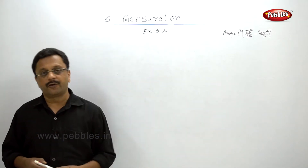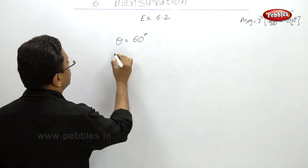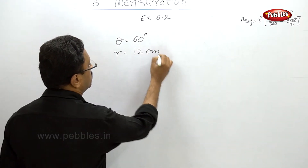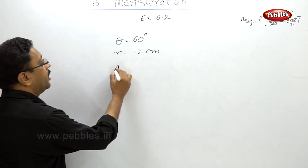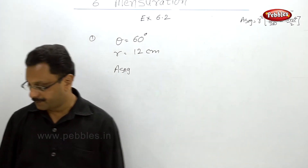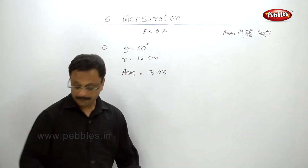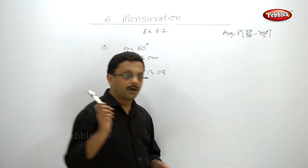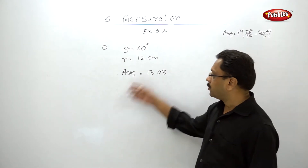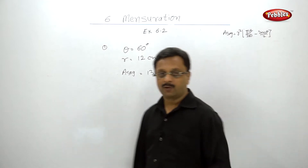Please pause your video and solve this. Theta is 60 degrees and radius is 12 centimeters — substitute in the formula and find out the area of the segment. The answer is 13.08. If you got this answer, note that it is wrong — not because the numbers are incorrect, but because you have not written the unit.